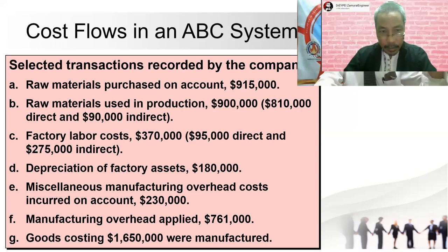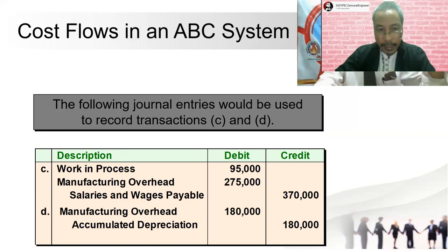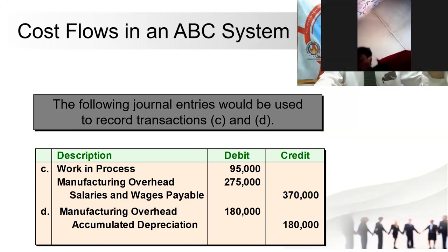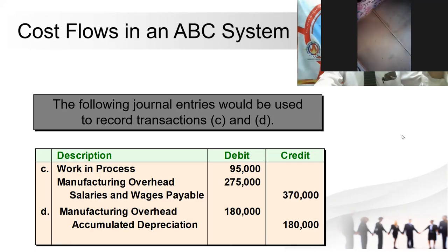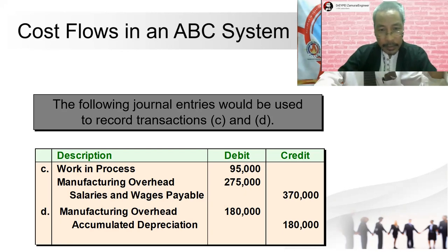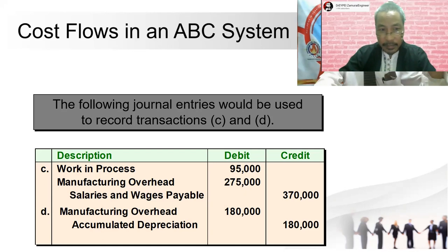Let us go to letter C. For letter C — factory labor cost — we debit work in process $95,000 and manufacturing overhead $275,000, and credit salaries and wages payable $370,000. Work in process and manufacturing overhead increase, so they are debited; salaries and wages payable is what the company has to pay, so it is credited.